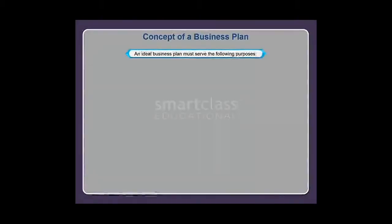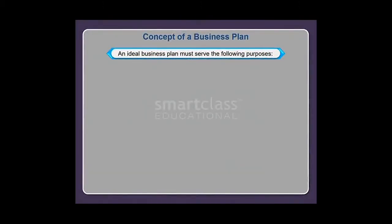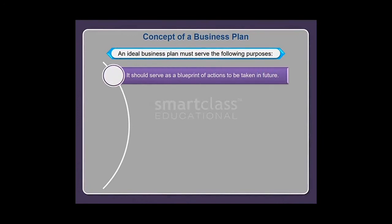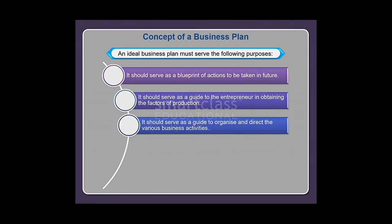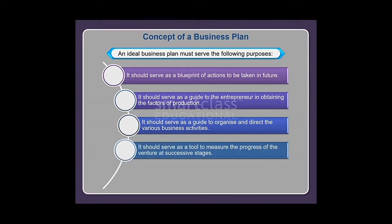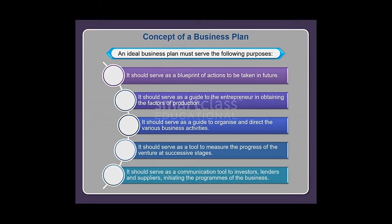An ideal business plan must serve the following purposes: it should serve as a blueprint of actions to be taken in future; it should serve as a guide to the entrepreneur in obtaining the factors of production; it should serve as a guide to organize and direct the various business activities; it should serve as a tool to measure the progress of the venture at successive stages; and it should serve as a communication tool to investors, lenders, and suppliers initiating the programs of the business.